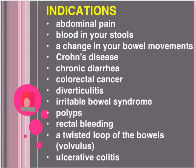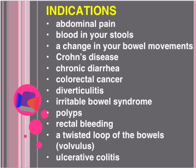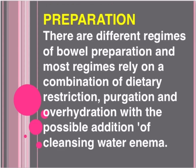Indications for barium enema include: 1) abdominal pain, 2) blood in your stools, 3) a change in your bowel movements, 4) Crohn's disease, 5) chronic diarrhea, 6) colorectal cancer, 7) diverticulitis, 8) irritable bowel syndrome, 9) polyps, 10) rectal bleeding, 11) a twisted loop of the bowels (volvulus), and 12) ulcerative colitis.